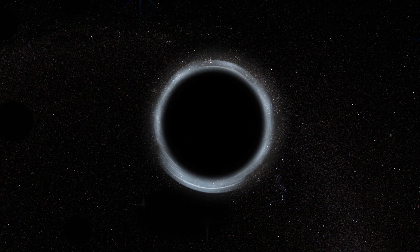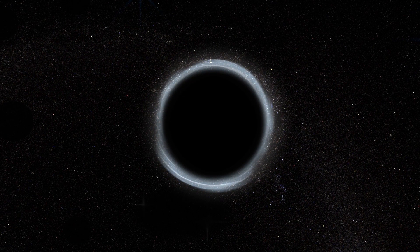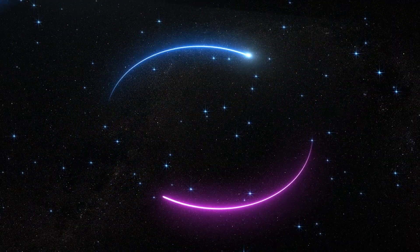Scientists at the European Southern Observatory report they may have spotted a black hole so close to Earth that its two companion stars are visible to the naked eye.